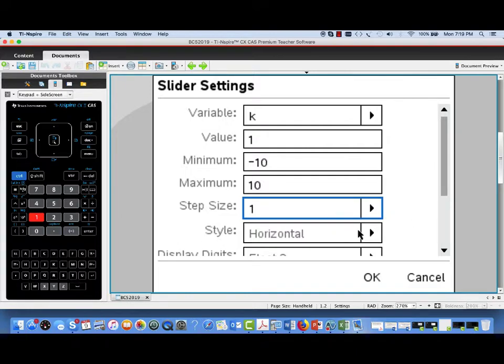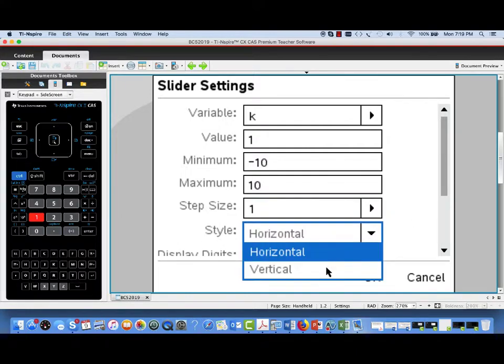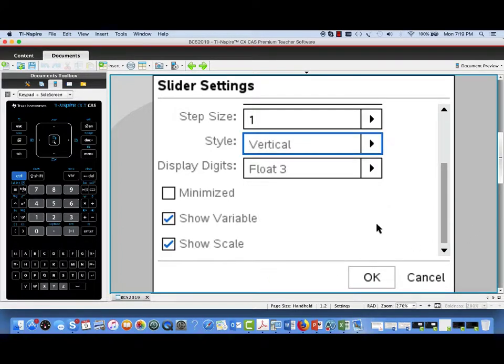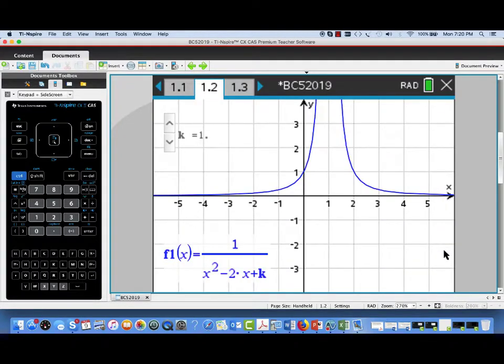And in terms of the orientation of the slider, I'm going to actually set it up to be vertical, and I'm also going to make it minimized, and what that means is instead of like a tuner bar, it'll just be a couple of clicker arrows. There we go. You see it up there in the upper left.